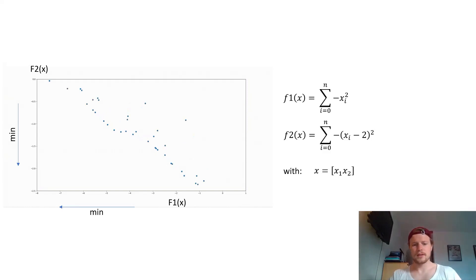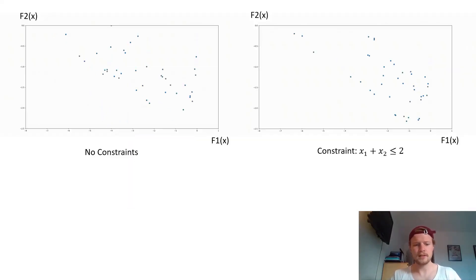Now to see the difference to a constraint problem, I animated on the left side the unconstrained NSGA2 search and on the right side, I added a constraint to the described problem. So my constraint here was that the sum of X1 and X2 needs to be smaller or equal than 2. As you can see, the constraint problem has a similar result to the minima of F2, but if you take a closer look to the X-axis, so looking at F1, most of the points on the constraint problems lie between minus 1 and minus 4. There are only some points coming better, like minus 5, minus 6, but they disappear again. So they are not in the Pareto frontier, and this is related to the constraint.